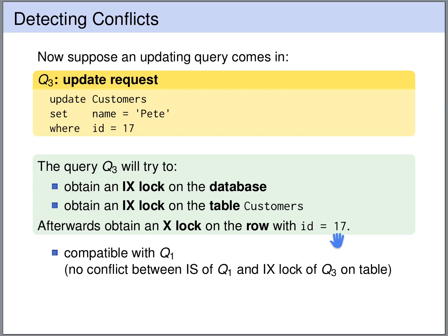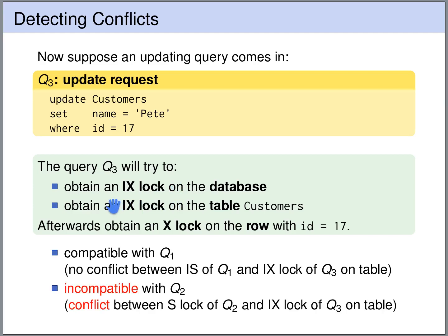Now let's look at query 2, the table-scanning query that scanned the entire customers table. Query 2 obtained an intention shared lock on the database — which is fine — and then a shared lock on the table customers. The shared lock on the table customers conflicts with the intention exclusive lock on the table customers from query 3, because a shared lock on the entire table is incompatible with an intention to exclusively lock some part of it. So query 3 would have to wait until the shared lock on the table is released by query 2.